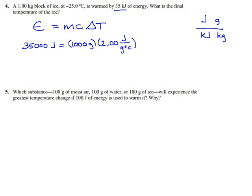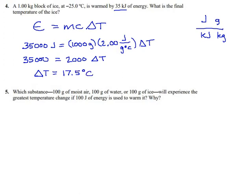The temperature change is what we don't know — that's what we're finding. We can multiply the 1,000 and the 2: we have 35,000 equals 1,000 times 2, which is 2,000 delta T. To get delta T, we divide both sides by 2,000. So delta T equals 35,000 divided by 2,000, which is 17.5 degrees Celsius. That's how much the temperature goes up.